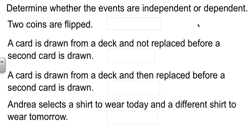So, let's determine if some of these are independent or dependent. If we flip two coins, well, I kind of gave that away, didn't I? That's independent because the coin doesn't impact the next flip.